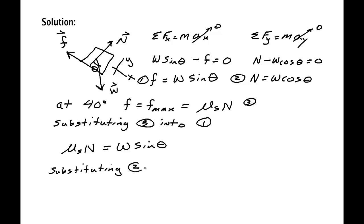Let's call this equation four. So we can substitute this equation for N into equation four, and we get mu_s times W cosine theta is equal to W sine theta.